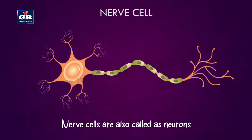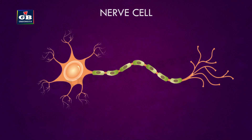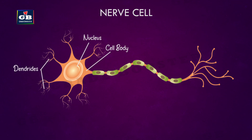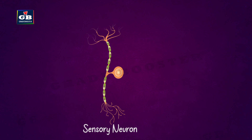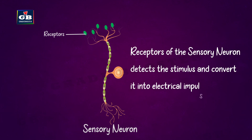Nerve cells are also called neurons. Each neuron has different parts: cell body, nucleus, dendrites, axon, and nerve endings. The neurons present in the sense organs have specialized tips called receptors, which detect stimuli.